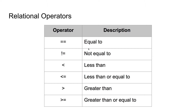There are six relational operators. The first is equal to, which looks like two equal signs together. The next is not equal to, which looks like an exclamation point and an equal sign together. We then have less than, which is an opening angle bracket, and less than or equal to, which is an opening angle bracket and an equal sign. We have greater than, which is a closing angle bracket, and greater than or equal to, which is a closing angle bracket and an equal sign.